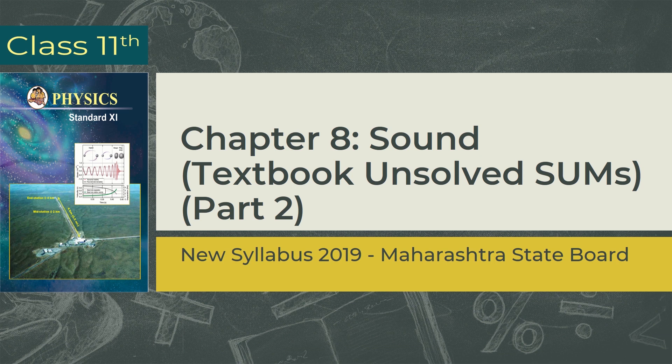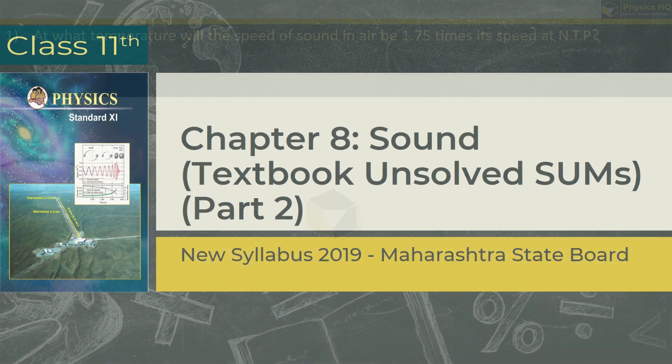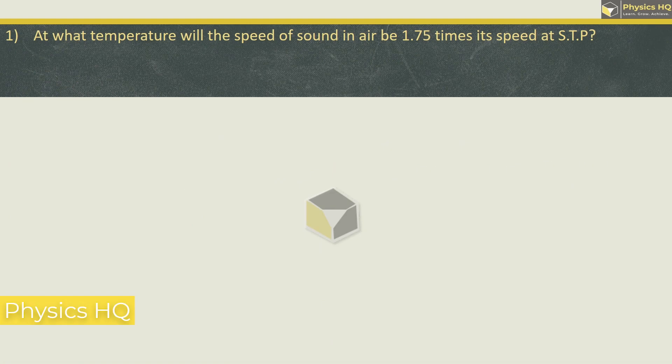We have already covered MCQs and part 1 of sum solving of this chapter. If you have not seen it yet, please check it out by clicking on the top right eye icon. Let us start with the first sum. At what temperature will the speed of sound in air be 1.75 times its speed at standard temperature and pressure?